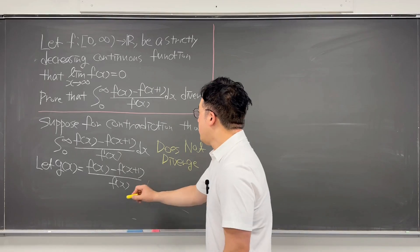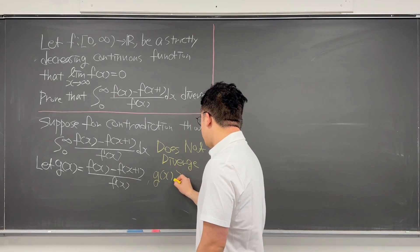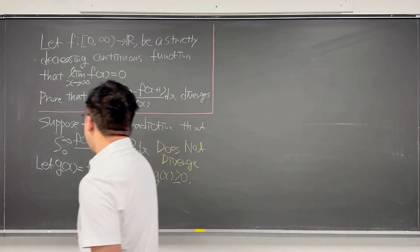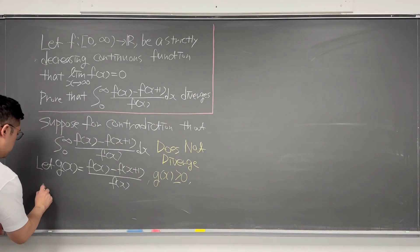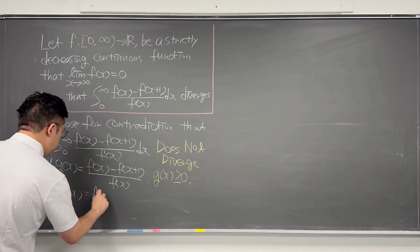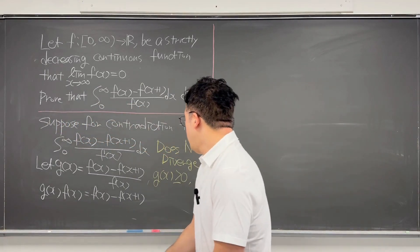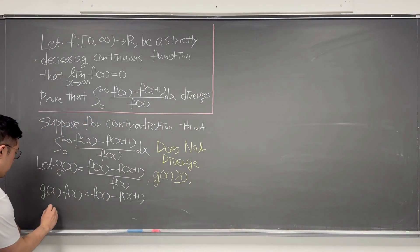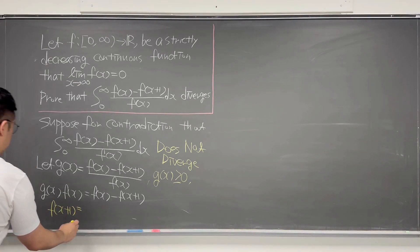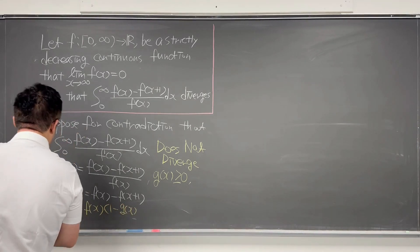We can easily say g(x) should be greater than or equal to 0. Then let's solve for f(x+1). We have g(x) times f(x) equals f(x) minus f(x+1), so f(x+1) equals f(x) times (1 minus g(x)).